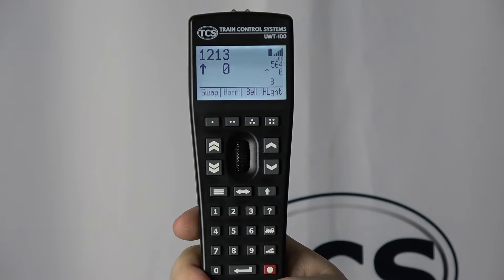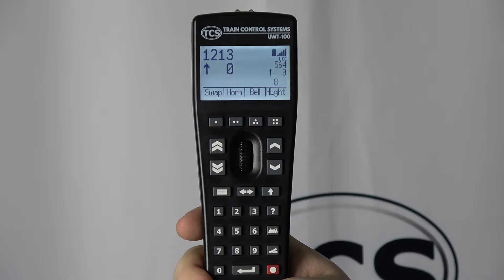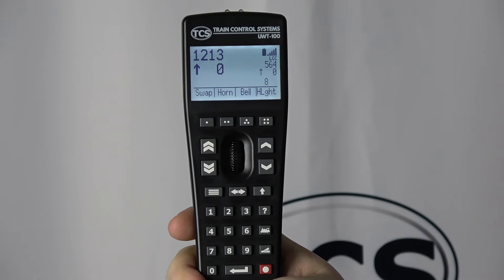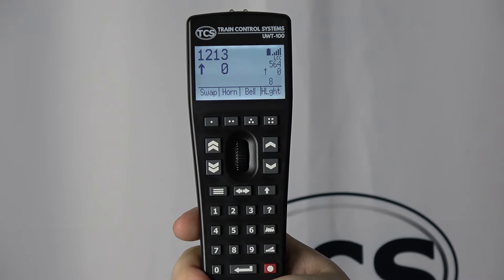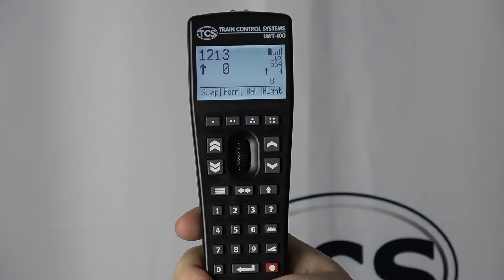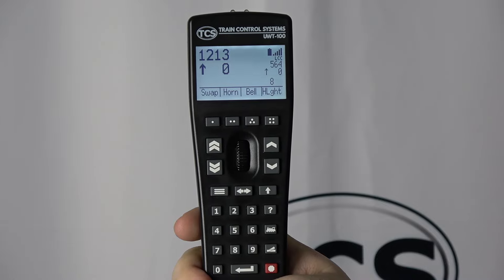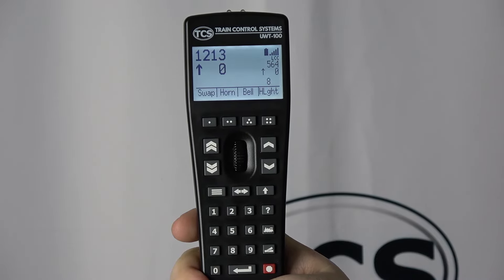Earlier, we said it is possible to change the direction of the secondary train without using the swap key. We will show you how. Use the dual direction function and map it to a soft key. You can use any of the soft keys, but in this demonstration we will be using the three dot soft key.